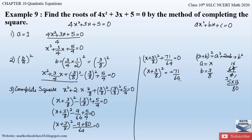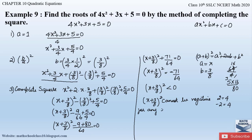Now observe that the right hand side is negative. The square of any real number cannot be negative — for example, 2² = 4 and (-2)² = 4. So (x+3/8)² cannot be negative for any real value of x. Therefore, there is no real value of x satisfying this equation, and the given equation has no real roots.